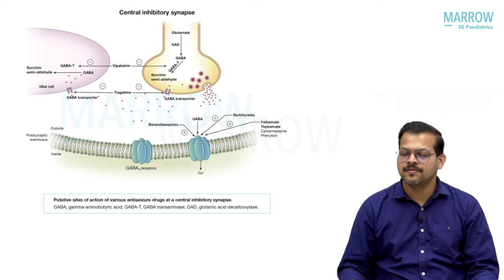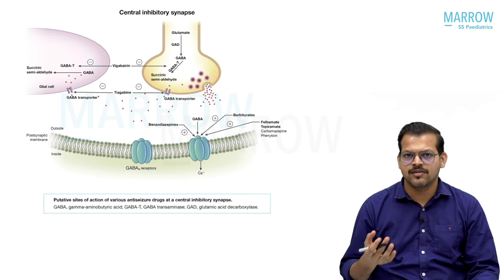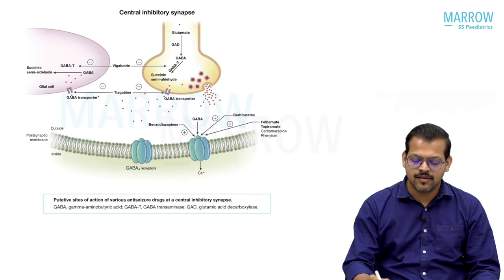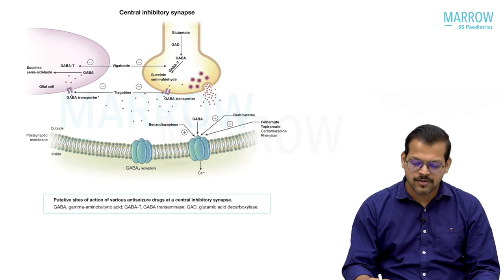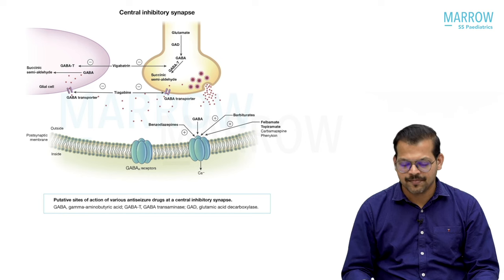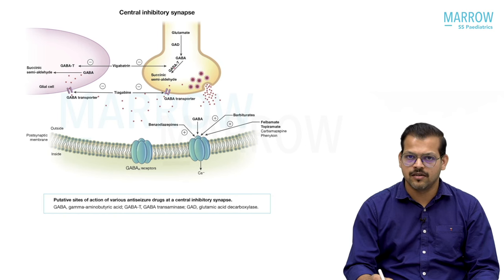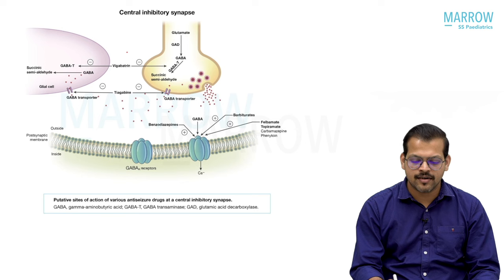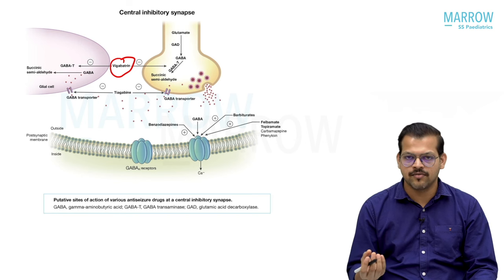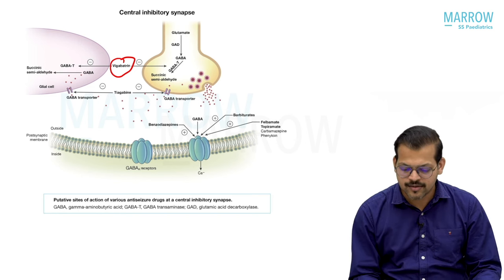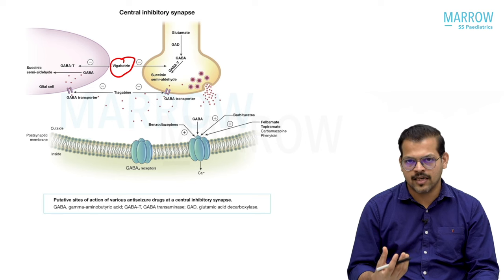Now we look at the central inhibitory synapse. In the inhibitory synapse, the neurotransmitter involved is GABA. The precursor for GABA is glutamate; through the enzyme glutamic acid decarboxylase, glutamate is converted to GABA. GABA can be stored in synaptic vesicles and released into the synapse, but within the axon terminal it can also be metabolized by the enzyme GABA transaminase. Vigabatrin acts here — it irreversibly inhibits GABA transaminase so that GABA concentration increases and more is released into the synapse. Tiagabine is another drug that prevents the re-uptake of GABA from the synapse, increasing synaptic GABA concentration.